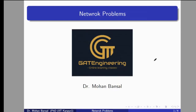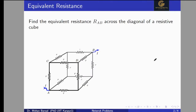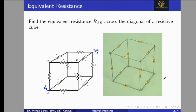Welcome to the GATE engineering online learning classes. In this video we will discuss a very important problem regarding equivalent resistance. This problem is important for all kinds of competitive exams and has been asked many times in different exams. We will find the equivalent resistance R_AB across the diagonal of a resistive cube, where all resistors have the same value.